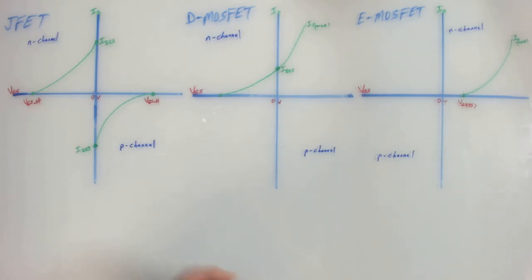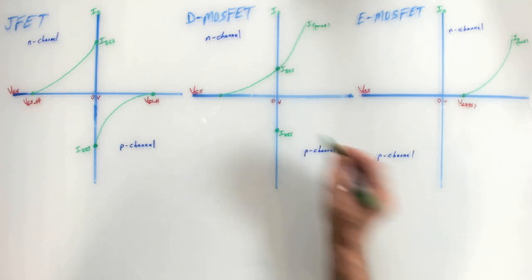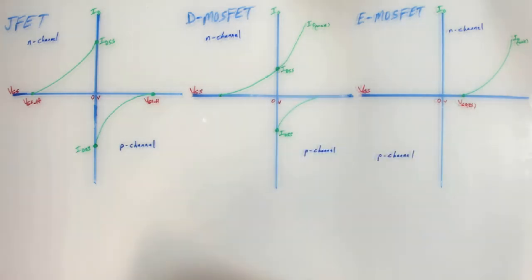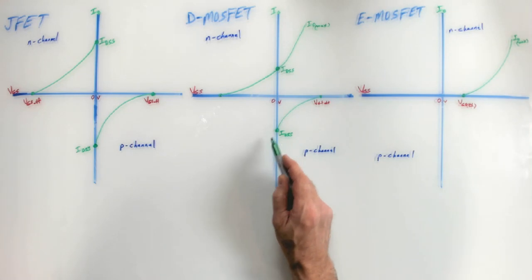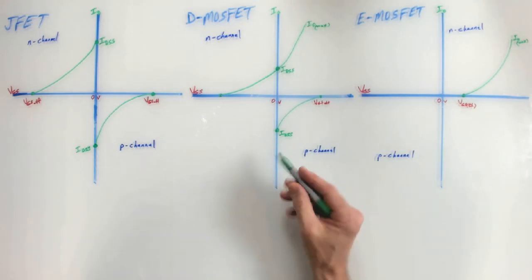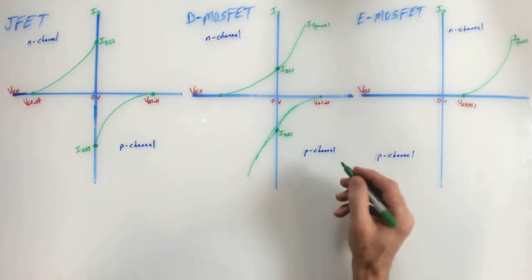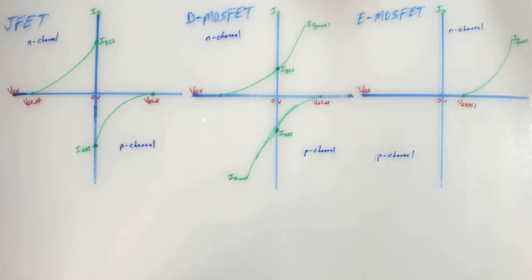We can do the P-channel versions for the D-MOSFET. But again, it would be current in the opposite direction represented as a negative. And so you still have IDSS. And you can deplete it with positive voltage, with positive gate voltage, and get the VGS off. And you can go the other direction as well. You can add negative voltage to the gate of a P-channel D-MOSFET and you'll enhance drain current. So a little bit of a rough sketch there. And that'll go to some maximum. The datasheet, again, would give you an idea of what the maximum is.